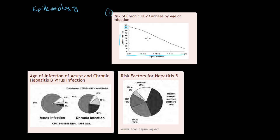It's a very high conversion rate. However, as an individual gets older, the risk of converting to chronic hepatitis B gets lower and lower. Then around the end for adults, for the average adult who gets acute hepatitis B, only about 5% go on to get chronic hepatitis B.